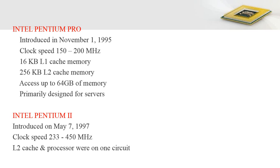In 1995, Intel introduced the Pentium Pro with a clock speed of 150 to 200 MHz. It could address 16 KB of Level 1 cache and 256 KB of Level 2 cache memory, and could access up to 64 GB of main memory. It was mainly designed to support server systems.